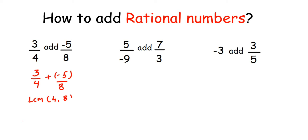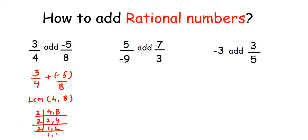I hope you all know how to find the LCM. I will just do it quickly. For 4 and 8, both go in the 2 times table: 2 twos are 4 and 2 fours are 8. We take 2 again: 2 ones are 2, 2 twos are 4, 2 ones are 2. So we got three 2s — multiply them: 2 twos are 4, 4 twos are 8. So LCM of 4 and 8 is 8.